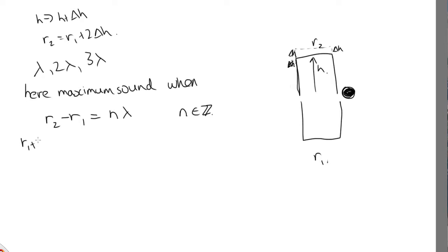is r1 plus 2 delta h, then minus r1. And so these r1's cancel out. So when 2 delta h is equal to n lambda, where delta h is the change in height, we end up with a maximum.